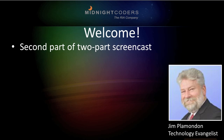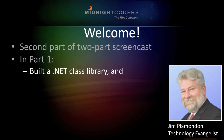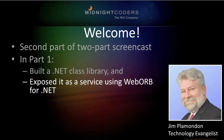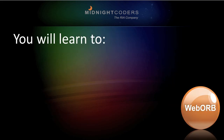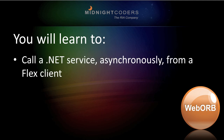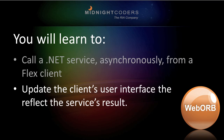This is the second part of a two-part screencast. In the first part, called 'Your First WebOrb-Enabled .NET Service,' we built a .NET class library and deployed its single method as an Internet service using WebOrb for .NET. In this second part, we'll build a Flex-based client to invoke this .NET service and display its result. You will learn to call a .NET service asynchronously from a Flex client and update the client's user interface to reflect the service's result.